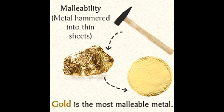Malleability refers to the property by which metals can be shaped into thin sheets by beating them with a hammer. This property makes metals quite useful in various scientific applications. This explains the concept of malleability in science with the help of examples. To speed up the process of shaping or molding metallic elements, heat can be applied to them.